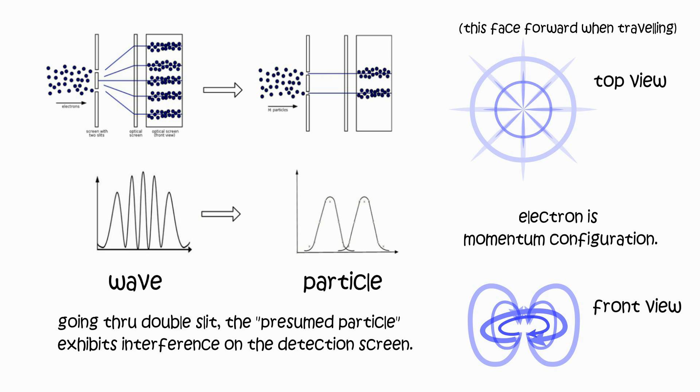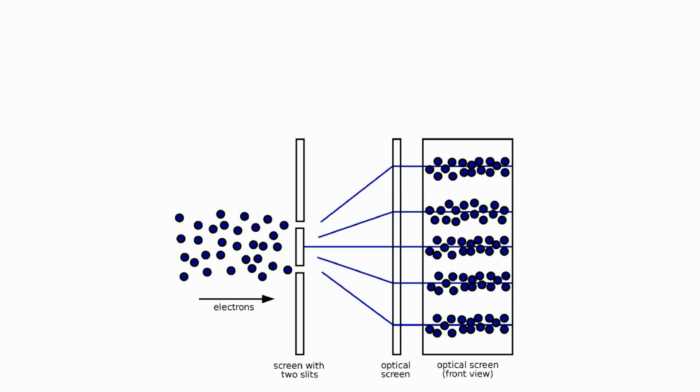A free electron is highly extended, to balance interaction with surrounding field. Once emitted from its source, electron begins circular extension.